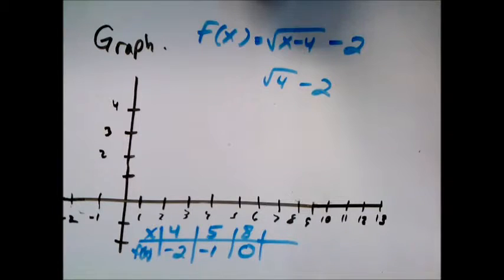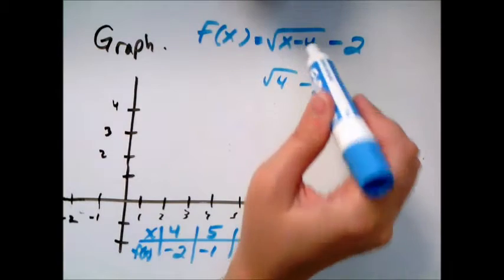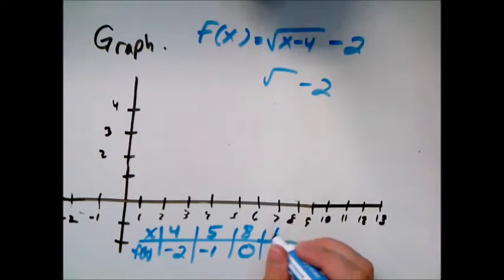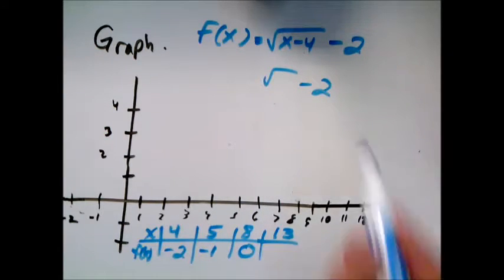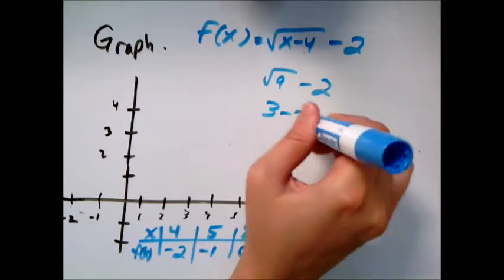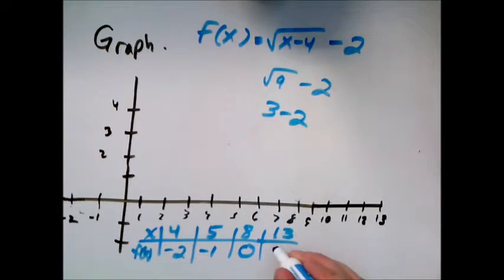All right, one more. Let's think what could we subtract 4 off of and still get a perfect square. Well, the next perfect square is 9, so maybe if I try 13. So 13 minus 4 will give me 9, square root of 9 is 3 minus 2, and so that is 1.